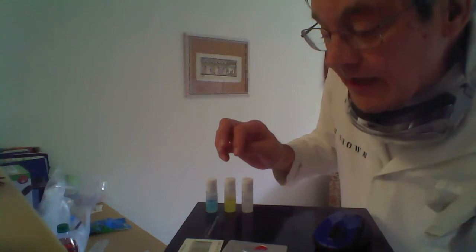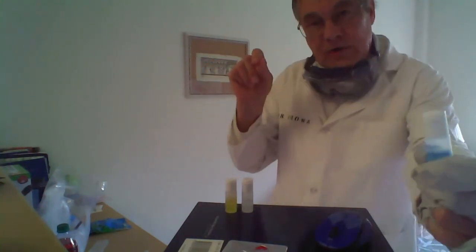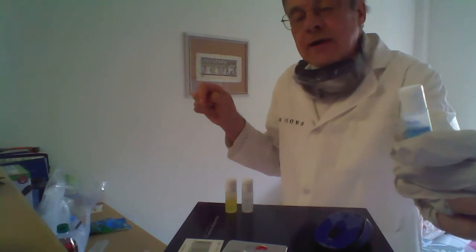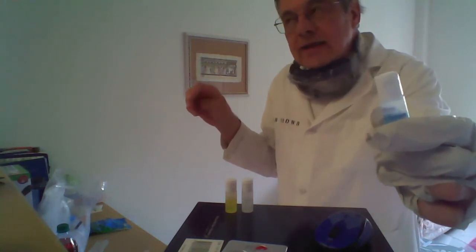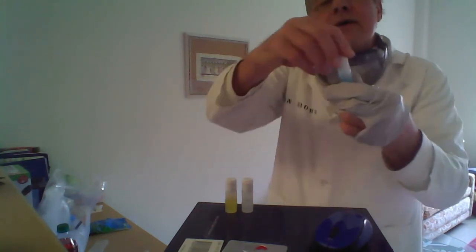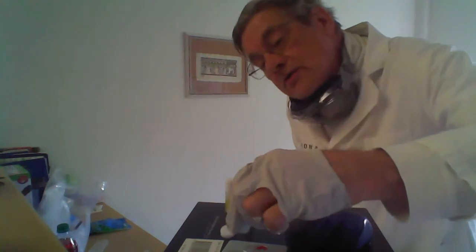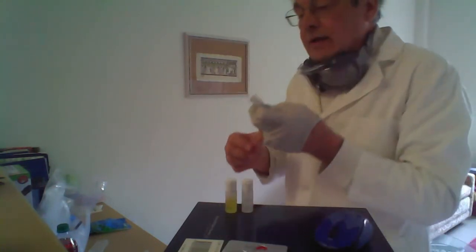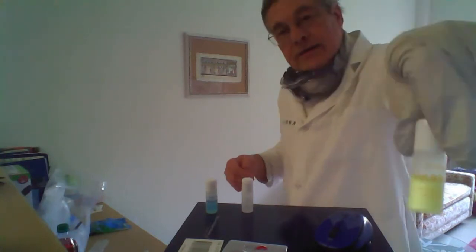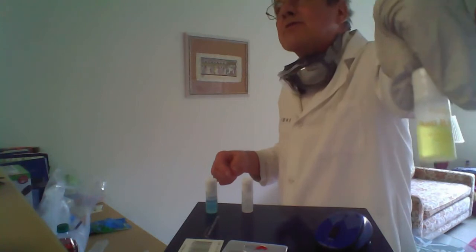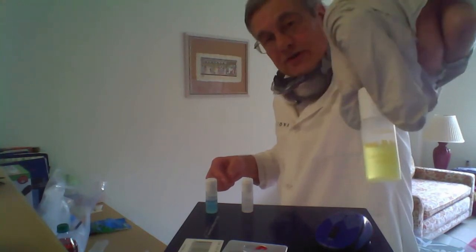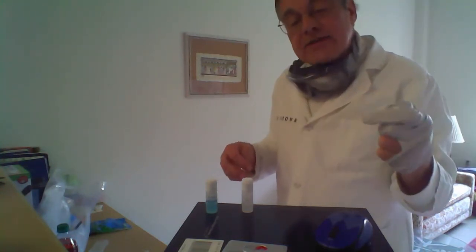Now the well labeled A is going to get anti-A serum, representing the antibodies in the serum of people who are type B and type O. One drop of anti-A serum. You'll find the antibodies to B in the serum of type A individuals and type O individuals. So a drop of that in the well labeled B.